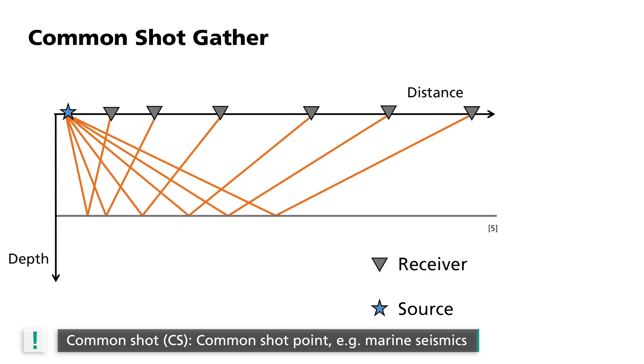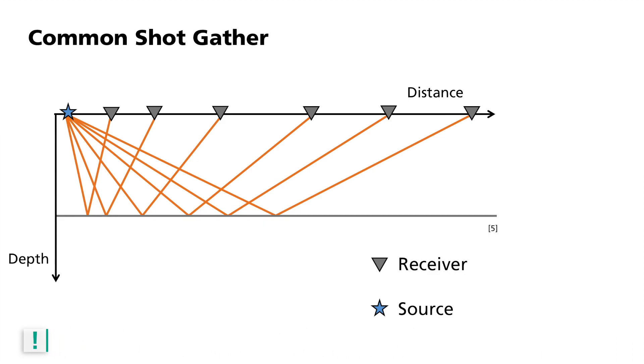While the whole system moves over the sea, the distances between the airgun and the hydrophones remain constant. With this arrangement, a subsurface structure can be revealed up to about halfway between the source and the most distant measuring point.